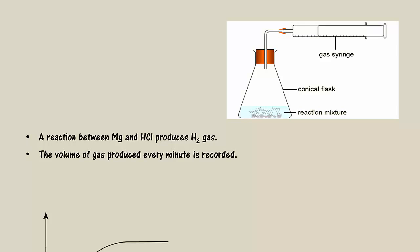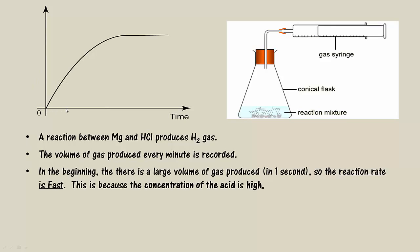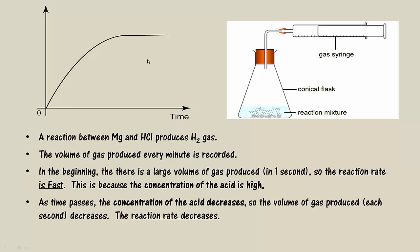This produces a reaction rate graph like this. In the beginning, there is a volume of gas produced in one second, so the reaction rate is fast. This is because the concentration of the acid is at its highest. As time passes, the acid gets used up and the concentration decreases, so the volume of gas produced each second will decrease, and the reaction rate slows down. Eventually, the volume no longer changes and becomes constant. Here, the reaction stops, as there are no reactants left, so therefore no collisions can be occurring.